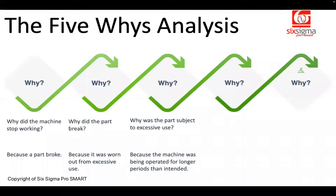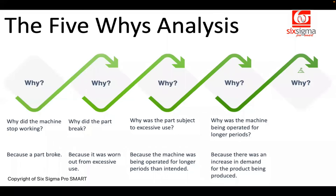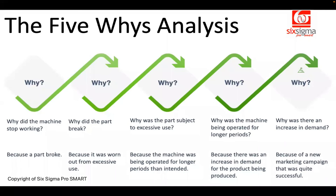Amanda: Could you elaborate — why was the part subject to excessive use? Brian: I think it is primarily because the machine was being operated for longer periods than intended. Amanda: Why was the machine being operated for longer periods? Brian: Because there was an increase in demand for the product. Amanda: Demand is good, but exactly why was there an increase in demand? Brian: Because our new marketing campaign was quite successful. Honestly, we were not ready with a plan to handle this much production.